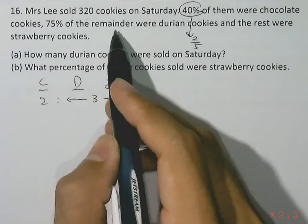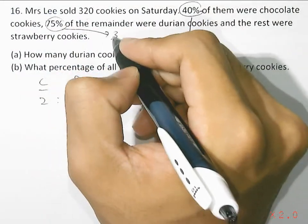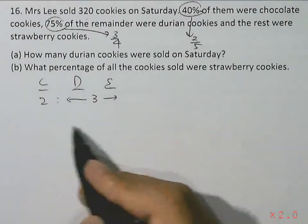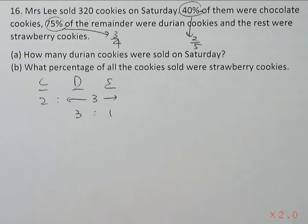75% of the remainder, so 75% is equal to three-quarters. So out of the remainder, three-quarters are durian, so the remaining one-quarter would be strawberry.